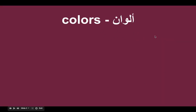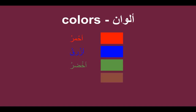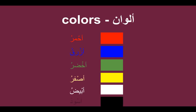We are also going to learn about colors today — just a brief introduction. Red is called Ahmaru. When you are talking you just say Ahmar, but the actual word will be Ahmaru with a single dhamma. Blue is Azraqu, green is Akhdaru, yellow is Asfaru, white is Abiyadu, and black is Aswadu. So we have Ahmaru, Azraqu, Akhdaru, Asfaru, Abiyadu, and Aswadu — these are the colors.